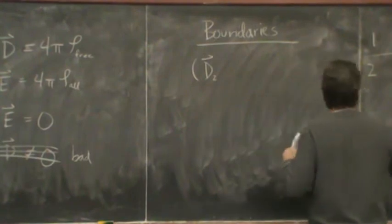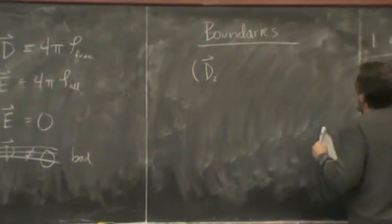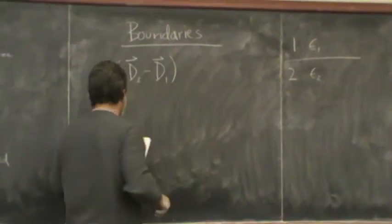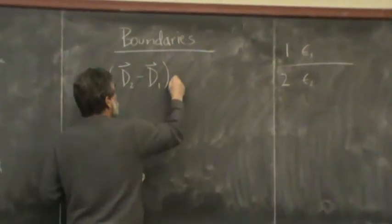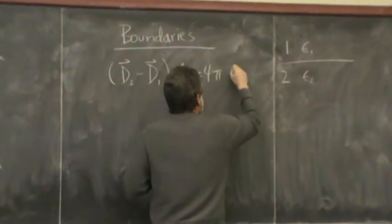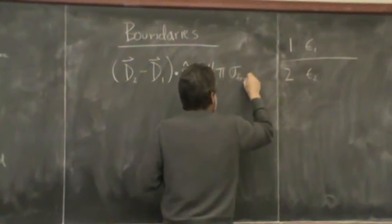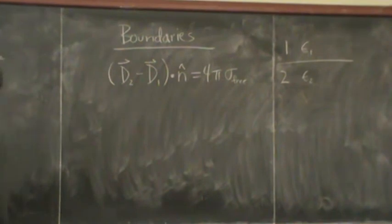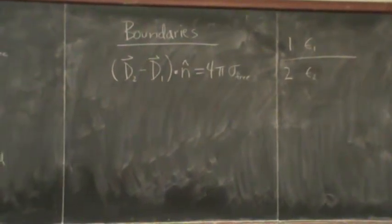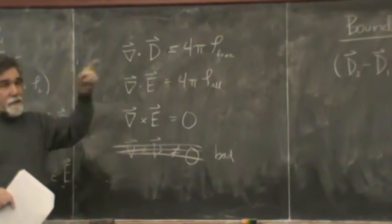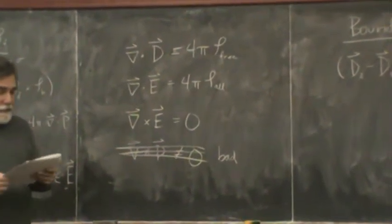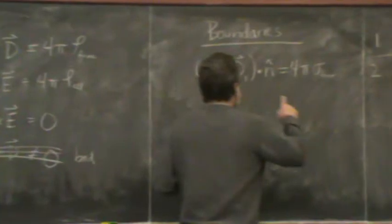Material 1, 2, epsilon 1, epsilon 2. D2 minus D1 normal to a surface is equal to 4 pi times the free charge density on the surface. That's actually what this thing here says. I apply Gauss's law with the displacement field, and I find out that it tells me the charge density of the free charge in the problem. That's simple. That's nice.